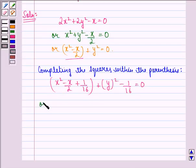So we can write this as (x - 1/4)² + y² = 1/16.